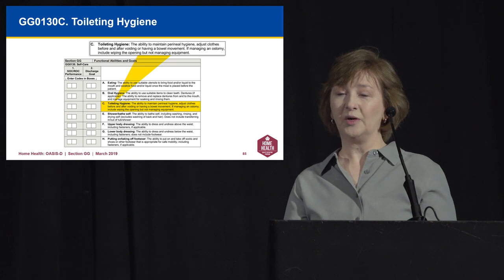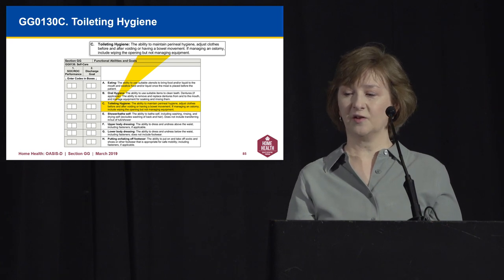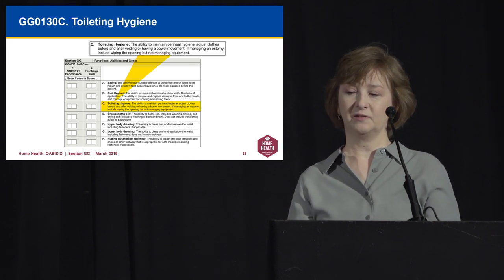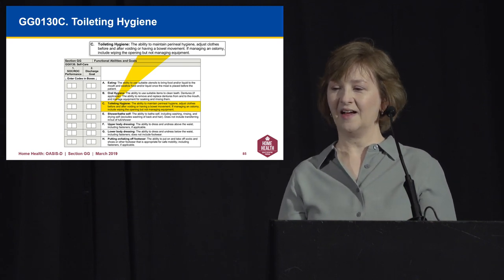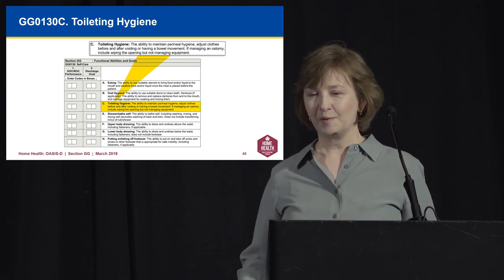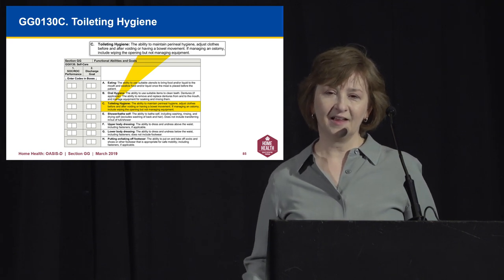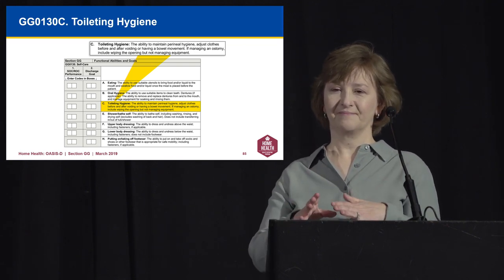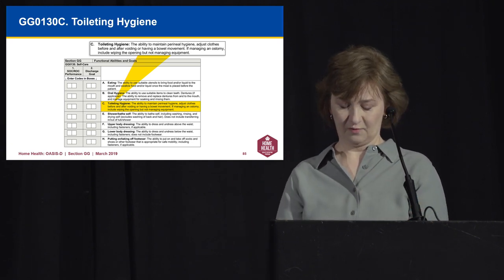Toileting hygiene relates to the ability to maintain perineal hygiene and adjust clothing before and after voiding or having a bowel movement. If the person has an ostomy, it includes wiping the opening but not managing the equipment. It covers pulling pants and underwear down, cleansing after voiding or a bowel movement, and pulling pants back up — not the actual voiding itself.